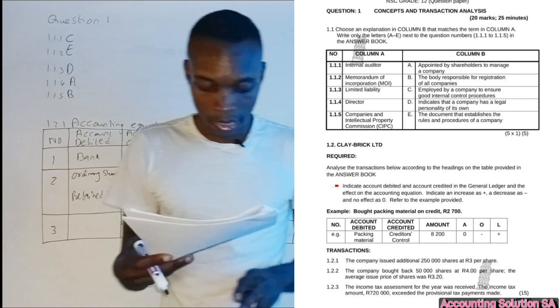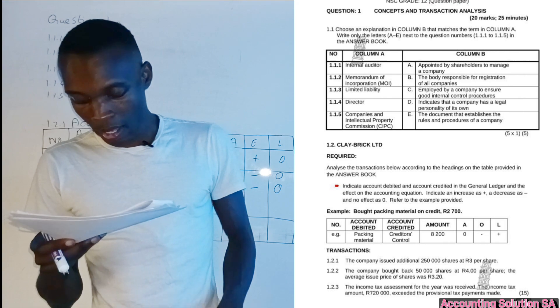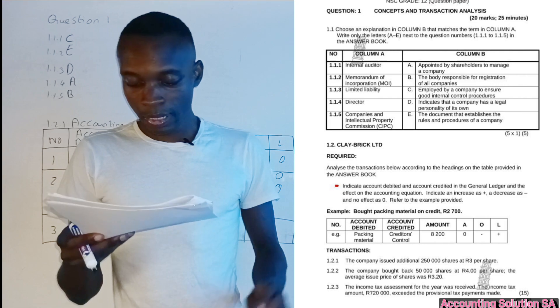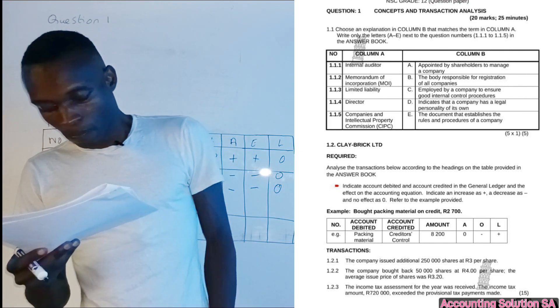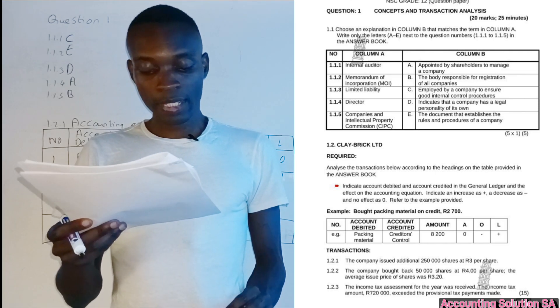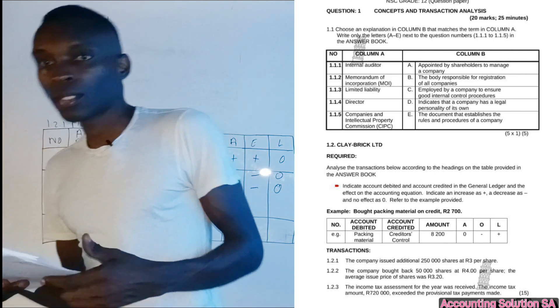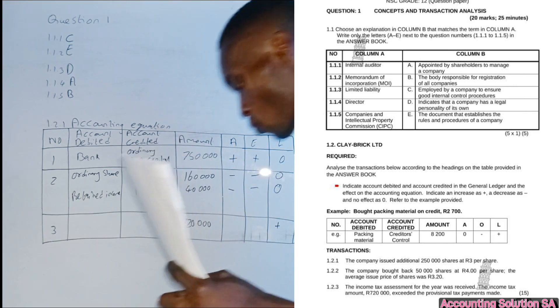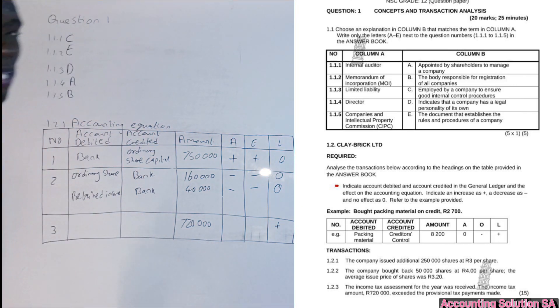The last one, they said income tax assessment for the year was received. The income tax amount of R72,000 exceeded the provisional tax payment made. In this case we have to recognize a tax expense of R72,000. In other words, we are owing a liability. Our liability has increased because we have to pay this money to SARS.